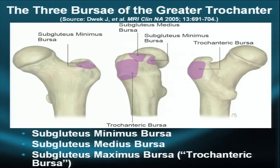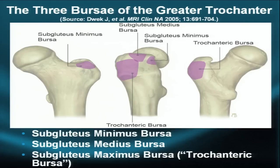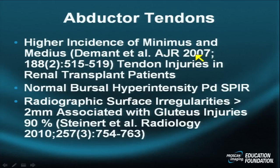The three main bursae of the hip: the gluteus minimus bursa anteriorly, the subgluteus medius bursa laterally under the gluteus medius tendon (with a posterosuperior component not drawn), and the subgluteus maximus bursa — also known as the trochanteric bursa — located posteriorly and slightly more inferior, which is the biggest bursa but least commonly symptomatic.